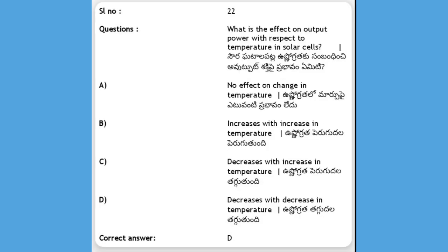Next, what is the effect on output power with respect to temperature in solar cells? The answer is D, output power decreases with decrease in temperature. In solar cells, lower temperature leads to decreased output power.